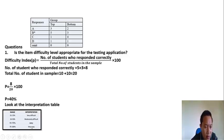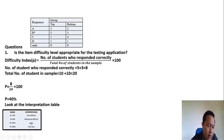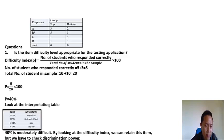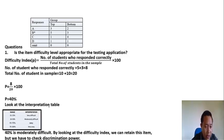If an item is very easy or easy, you have to modify it, because we want an item that is neither very difficult nor very easy — moderately difficult is considered the best. Sometimes it depends on the teacher; if you want to challenge students, you can go for a very difficult item. Here, 40 percent is moderately difficult, but we still have to check the discrimination power before making a conclusion.